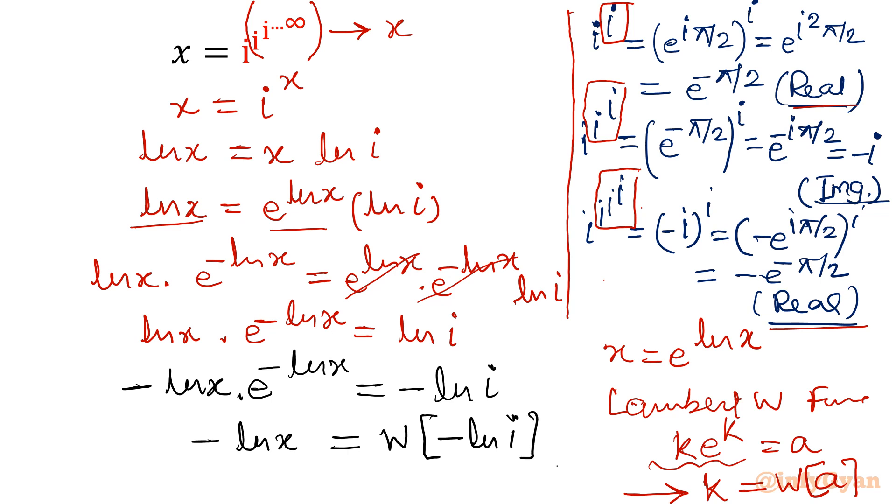Now you can see the equation: ln x is equal to x ln i. So in place of ln x, what I will put? x ln i. So minus x ln i equal to Lambert W of minus ln i. Now to get the value of x, we have to divide both sides by minus ln i. So x will come out W of minus ln i divided by minus ln i.